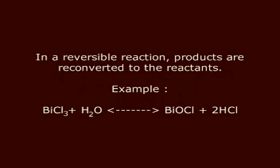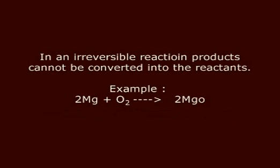Reversible and irreversible reactions. In a reversible reaction, products are reconverted to the reactants. Example: BiCl3 + H2O gives BiOCl + 2HCl. In an irreversible reaction, products cannot be converted into the reactants. Example: 2Mg + O2 gives 2MgO.